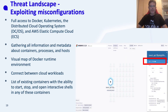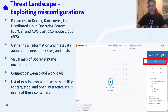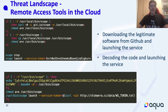WeaveScope allows full access to Docker, Kubernetes, distributed cloud operating systems, and ECS environments. It allows you to gather all information and metadata about containers, pods, namespaces, and hosts, and view it in a graph or table mode. It also allows you to see a visual map of the Docker runtime environment to connect between cloud workloads. Most powerfully, it allows you to start, stop, and open interactive shells with containers — giving full control over the cluster. These extensive capabilities caught the eyes of attackers, and over the past year we've seen hundreds of attacks that run WeaveScope to gain visibility and control over Kubernetes clusters.